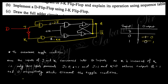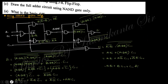Our target is to eliminate the toggle condition by this method. The next question asks to draw the full adder circuit using NAND gates. This is already discussed in our regular series classes. The NAND gate implementation gives you the full adder circuit — this is the carry output and this is the sum output of the full adder, as discussed in our digital circuit series playlist.